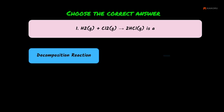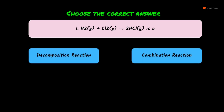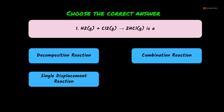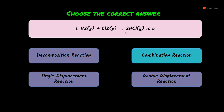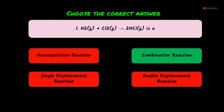First option: decomposition reaction. Second: combination reaction. Third: single displacement reaction. Fourth: double displacement reaction. We know two reactants giving one product is a combination reaction. So the answer is combination reaction.